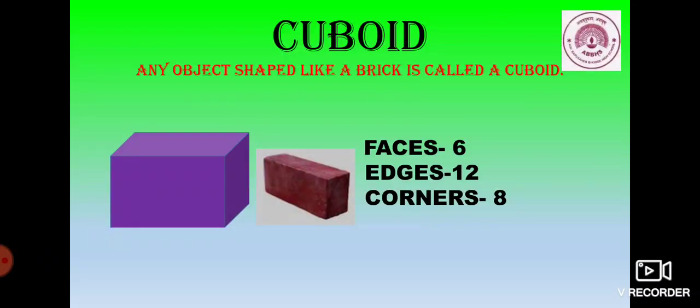The next one is cuboid. Any object shape like brick is called a cuboid. It has 6 faces, 12 edges and 8 corners.